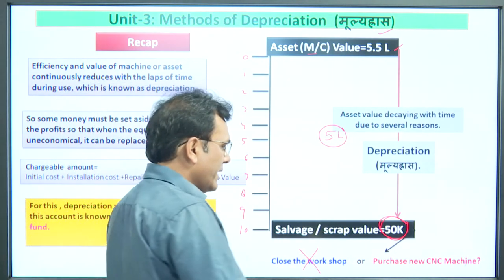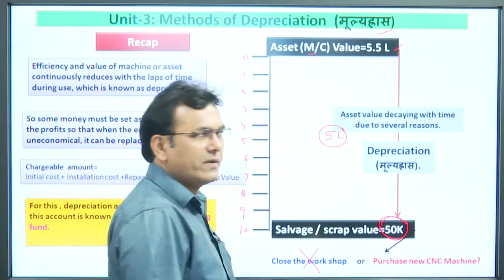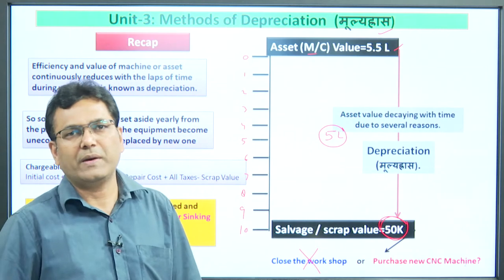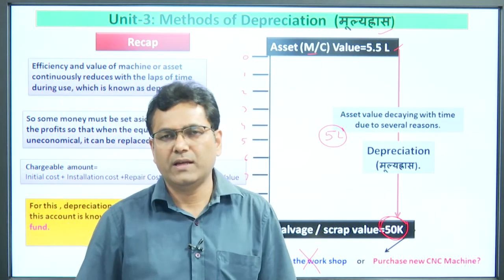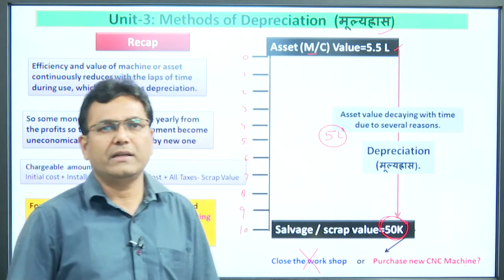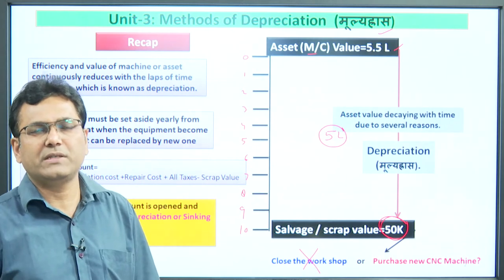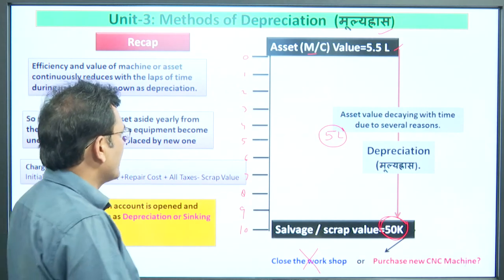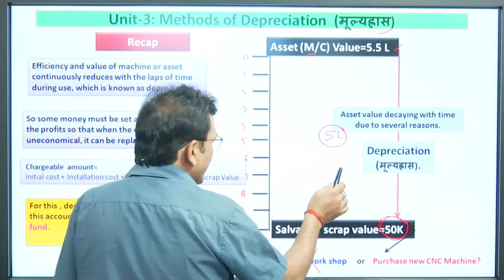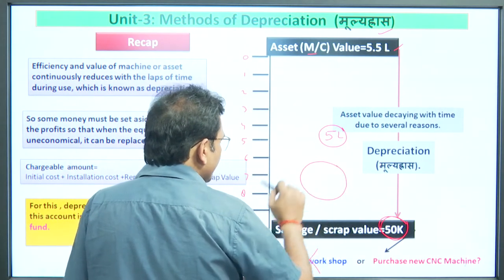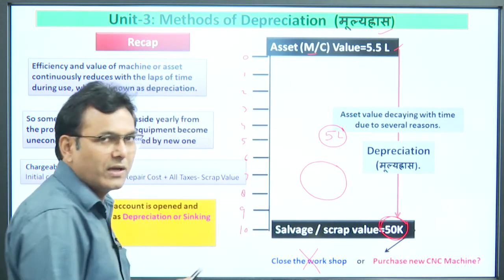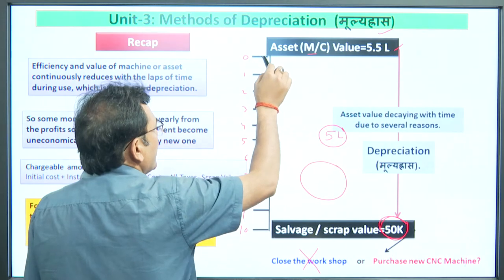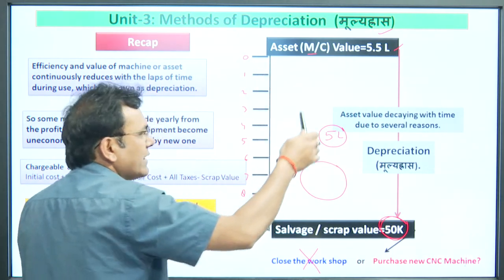We want to purchase a new machine, but 50,000 is not enough after 10 years. So we must have sufficient funds. The question is: how to create this fund? This process is what we analyze in depreciation. From the previous lecture, the idea is simple — create a fund, open a bank account, and at the end of each year deposit a certain amount from the profit.